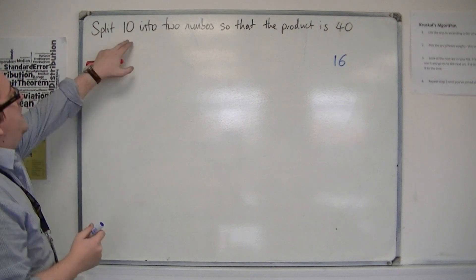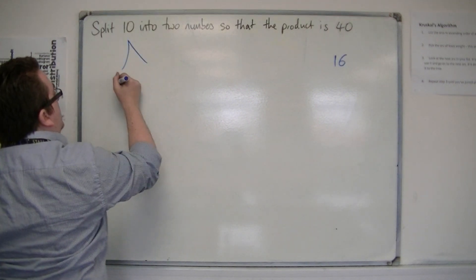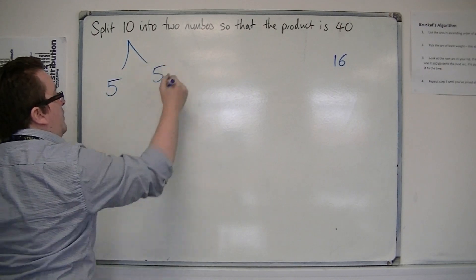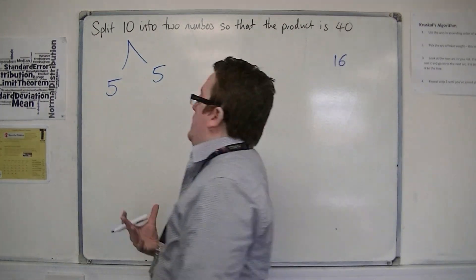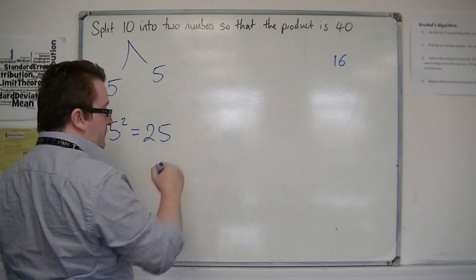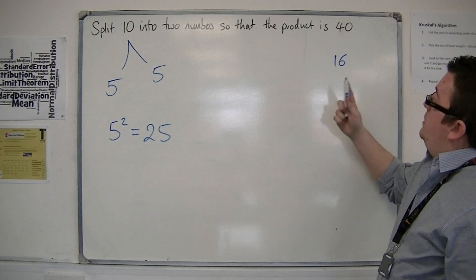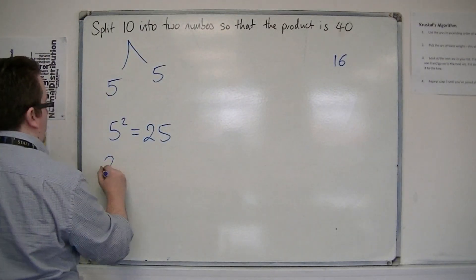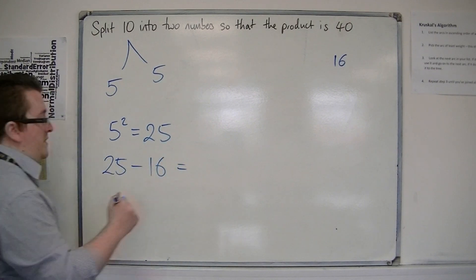Now if you take the number 10 and split it into two parts, you get 5 and 5. And then you square 5. So 5 squared is 25. And then you take away the number that you're trying to reach the product. So 25 take away 16, it's 9.